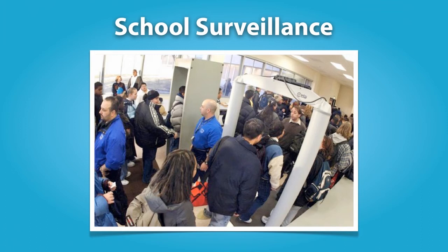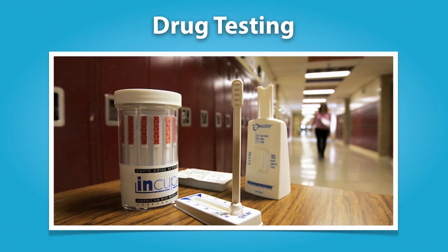The third area where a student's privacy rights in schools are implicated involves drug testing. In 1995, in the case of Veronia School District v. Acton, the Supreme Court ruled that athletes can be tested for drugs without any individualized suspicion of drug use. The court noted that student athletes are used to being in locker rooms and showers together where there is not an expectation of privacy. The court noted that it has long recognized that a search unsupported by probable cause nevertheless can be constitutional where, quote, special needs beyond the normal need for law enforcement make the warrant and probable cause requirement impracticable, end of quote. The court observed that school athletes have a reduced expectation of privacy because there is, quote, an element of communal undress inherent in athletic participation, end of quote.